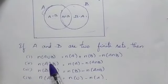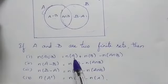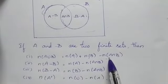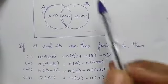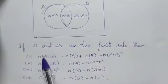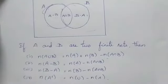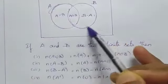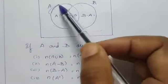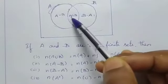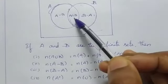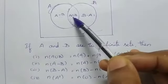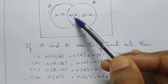N of A union B is equal to N of A plus N of B minus N of A intersection B. A union B means the whole portion of A and B. If you take N of A, N of A intersection B is included. If you take N of B, N of A intersection B is also included.